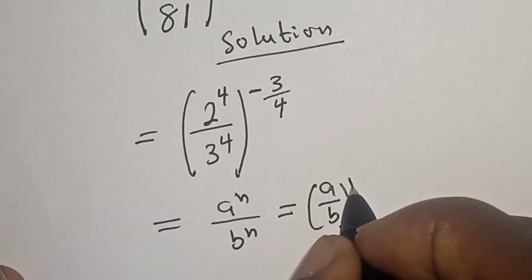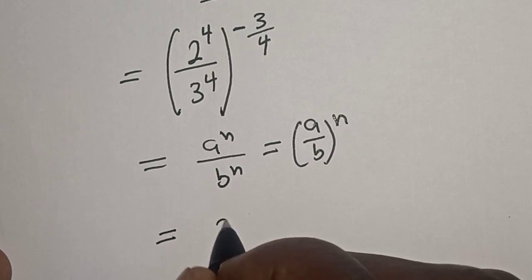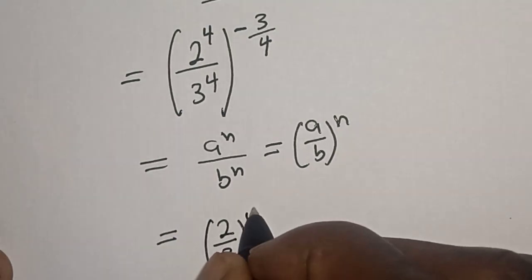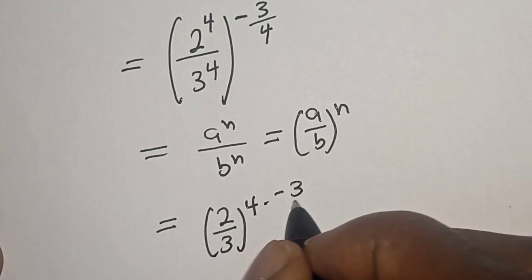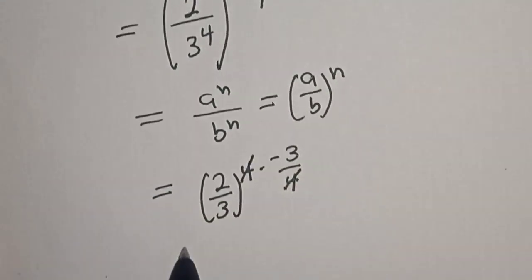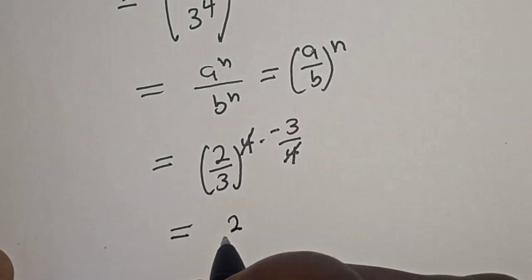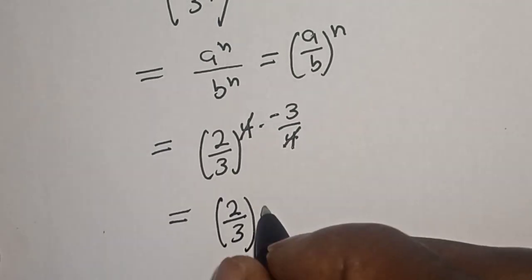Then here we have 2 over 3 raised to power 4 multiplied by minus 3 over 4. Then this one will cancel this. This is equal to 2 over 3 raised to power minus 3.